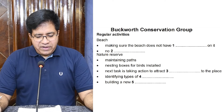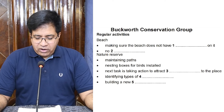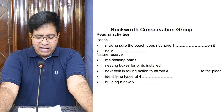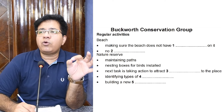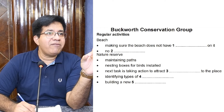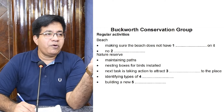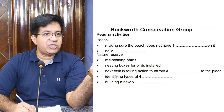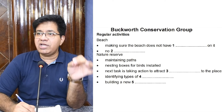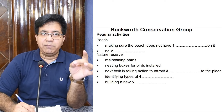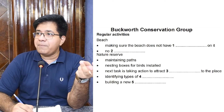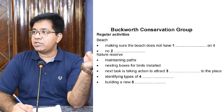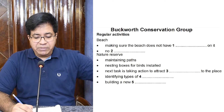It's IELTS Listening Part 1 — complete the notes, write one word and/or a number. Buckworth's Conservation Group, first activity: beach, making sure the beach does not have something. For 'does not have,' they can paraphrase using 'without' or 'make free from.' For example, the answer could be 'garbage' — making sure the beach does not have garbage, making the beach free from garbage.